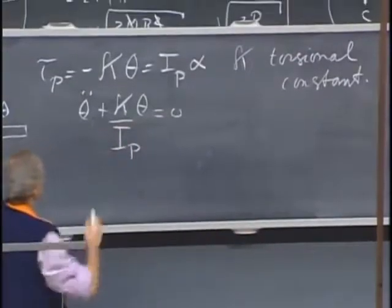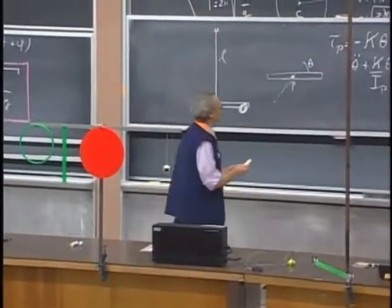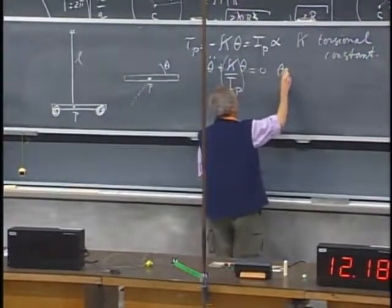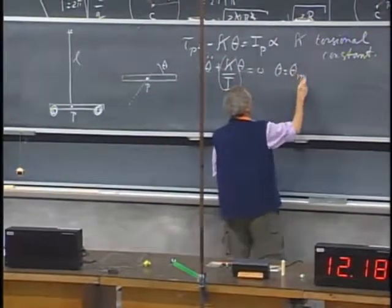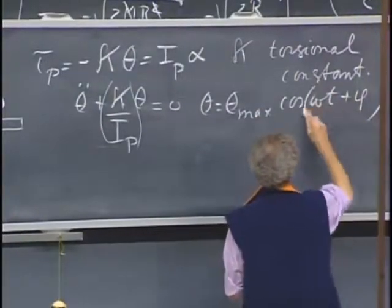So we have a differential equation. It's clear that you're going to see a simple harmonic oscillation. This is a constant. And so you're going to get theta equal theta maximum times the cosine omega t plus phi.